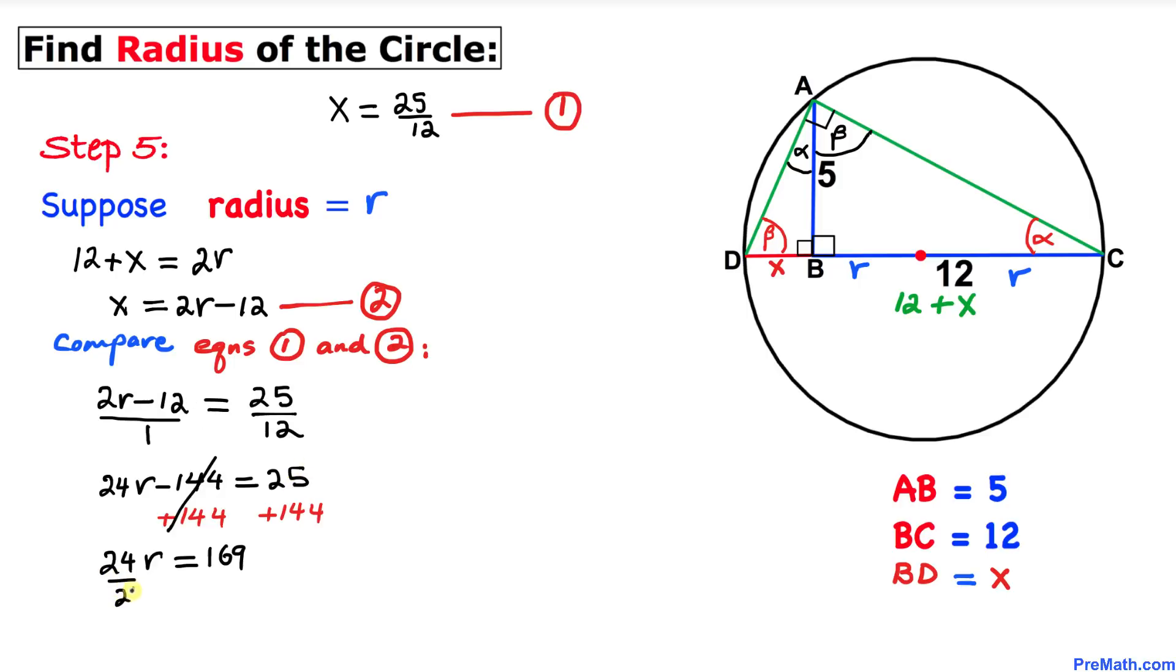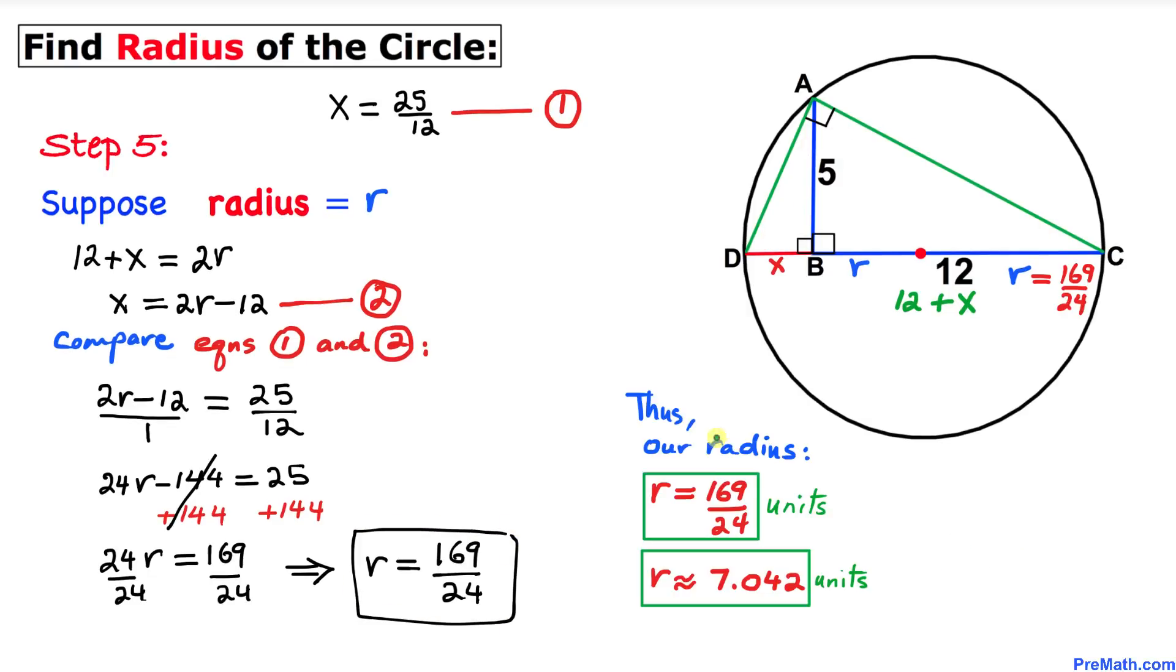Let's divide both sides by 24. So our r value turns out to be 169 divided by 24 units.